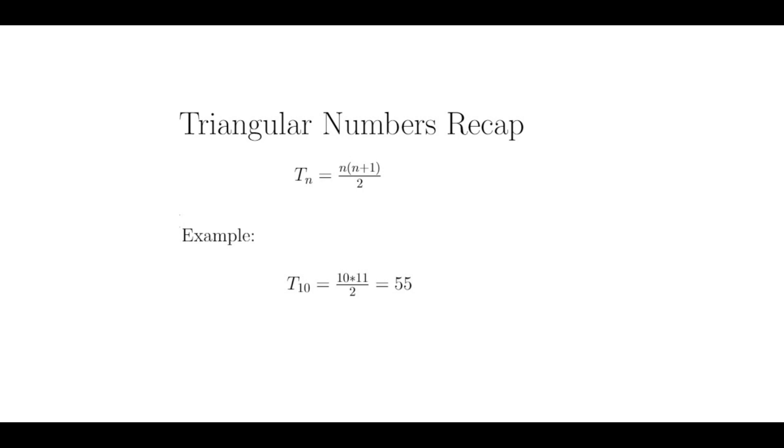So for example, to get the 10th triangular number, I just plug in 10 in place of n, and I get 10 times 11 divided by 2, which is 55. So T sub 10 equals 55.